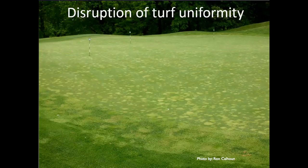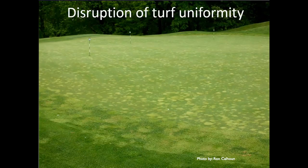This is annual bluegrass in a creeping bentgrass putting green. I think it looks neat — it's like research heaven — but it's a disruption of turf uniformity. We always seem to think it has to be uniform all the way across, with a uniform color as our foundation. If Tiger Woods had to putt on this, that ball when it rolls across that putting green is not going to roll true — it's going to play plinko across it.